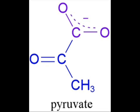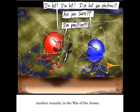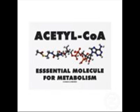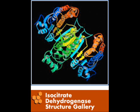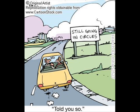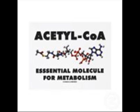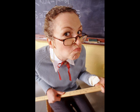First you start with pyruvate. Then you take out an electron, and you get acetyl-CoA. And you only need one thing — that's isocitrate dehydrogenase. After isocitrate dehydrogenase, it goes round the circle, back to acetyl-CoA. Don't worry, we didn't forget the net gain.